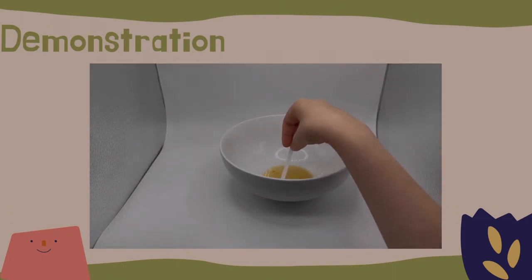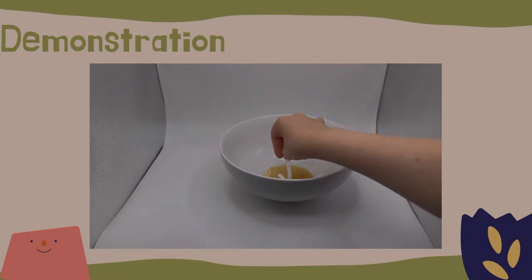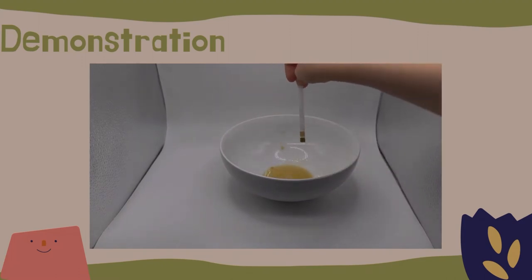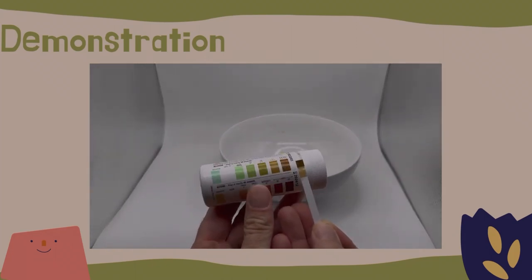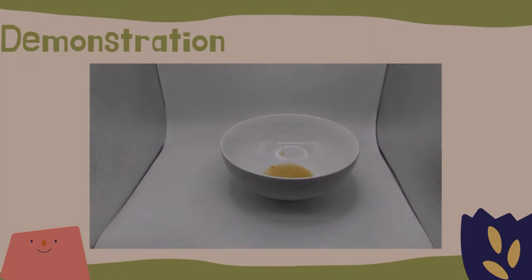Once we have some juice to work with, we can use a glucose strip to measure how much is in the solution. Our strips ask us to measure after 30 seconds, which shows that our sugar concentration is over 2%. This is off the scale, so we don't actually know how much sugar is in it.